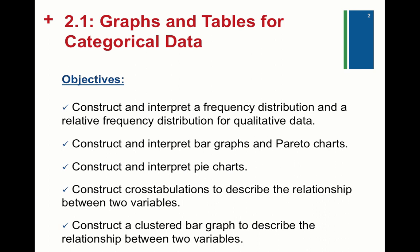2.1 introduces graphs and tables for categorical data. Remember, categorical data is also known as qualitative data, so don't forget qualitative and categorical are the same thing. Things like color, male or female — things that are put into categories, characteristics that aren't numbers that you can do math to.